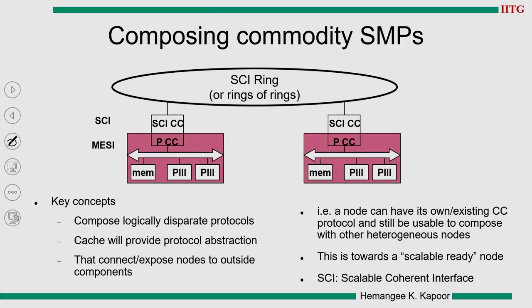We are going to compose symmetric multiprocessors. Every pink box here is a node which is itself a multiprocessor node handling its own cache coherence protocol, and all these nodes are connected using some network. In our current example, we are going to use a ring network. The key concept we will understand is that I can compose logically disparate protocols: the snooping protocol is composed with a directory protocol. The directory protocol could be memory-based or cache-based — in this case, it is a linked list cache-based protocol and not a bit-vector directory type.